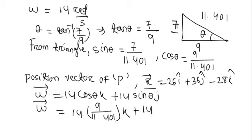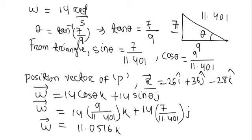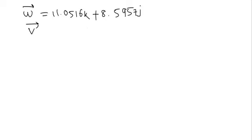Now calculating this, we can write angular velocity vector omega is equal to 11.0516k plus 8.5957j. Now vector V of point P is equal to omega into R.